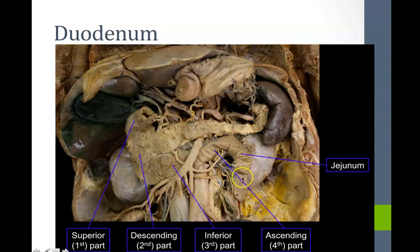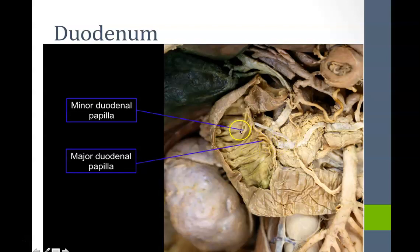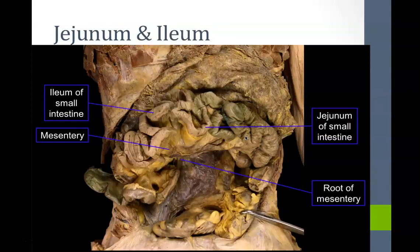The jejunum is identified in the cadaver lab because it is located in the left upper quadrant of the abdomen. Looking at a closer dissection of the duodenum, the wall has been cut to reveal the major duodenal papilla, which allows bile and pancreatic juices to enter. There is also sometimes a minor duodenal papilla that allows additional pancreatic juices into the duodenum.